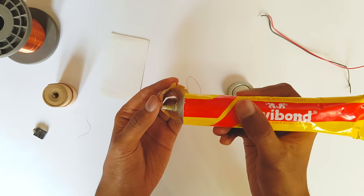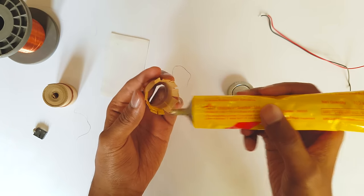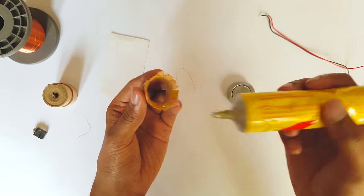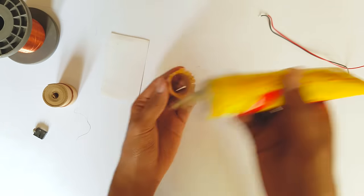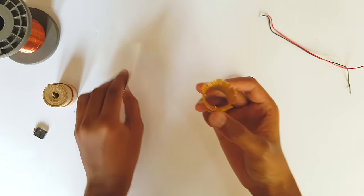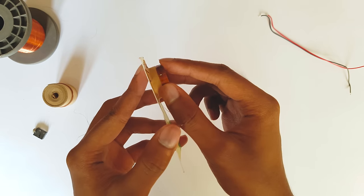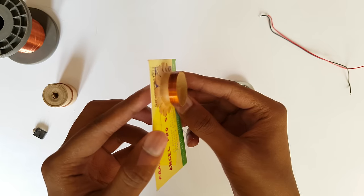Now stick this coil to the diaphragm just like this and hold it firmly. So this is how the diaphragm will look like after attaching the coil to it.